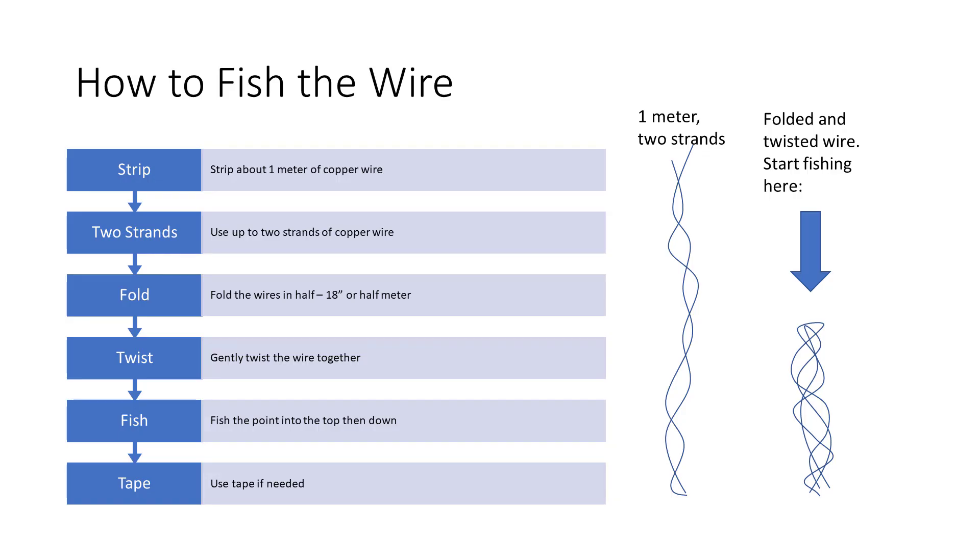Here's how we do the wire. You're going to take, let's say, two thin pieces of wire about a meter long. Then you're going to kind of twist them a little bit and then you fold it in half. Notice that arrow points to kind of where the middle of the fold is - that's the part that you're going to fish in the top. And use tape if needed.